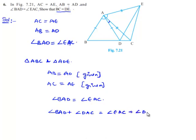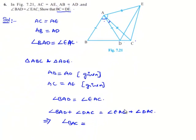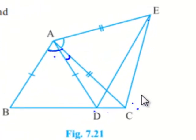We get angle BAD plus angle DAC is equal to angle BAC, that is equal to angle EAC plus angle DAC, which will be equal to angle EAD.